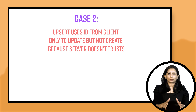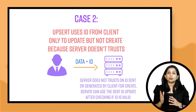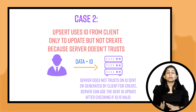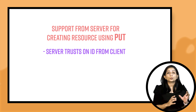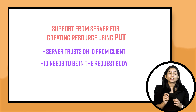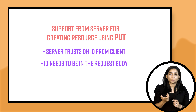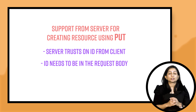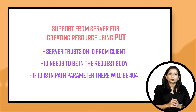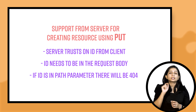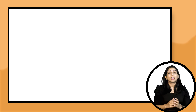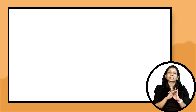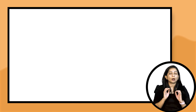Now let's say the server doesn't support upsert operation and doesn't trust the ID sent by the PUT request — in that case, it can only update the existing resource. When the server supports upsert and allows PUT to create resources, we expect the ID to be sent in the body and not as a path parameter. Because if upsert has to be supported and you send the ID as a path parameter, in the case where the resource doesn't exist, it will result in a 404. That's why we send the ID in the request body.